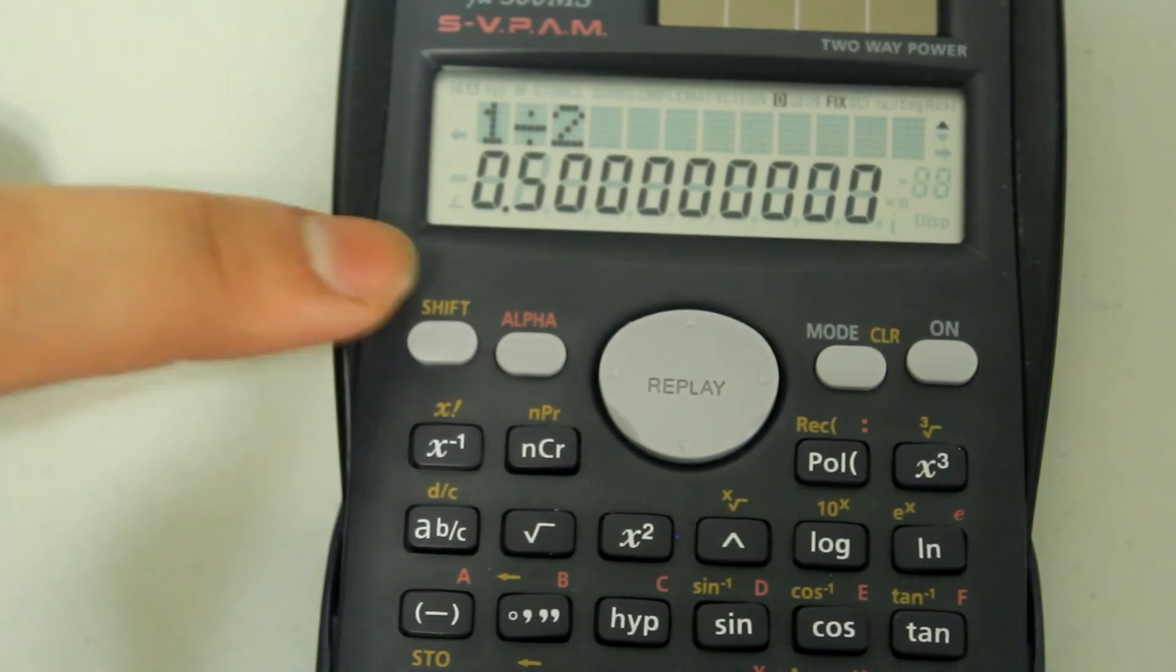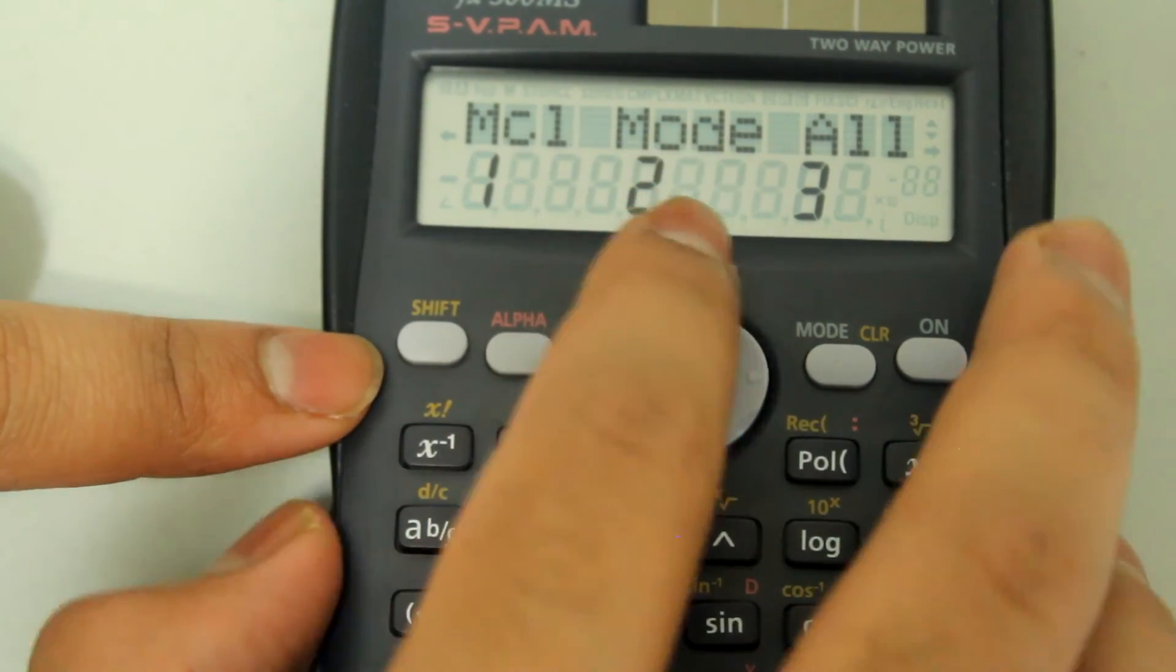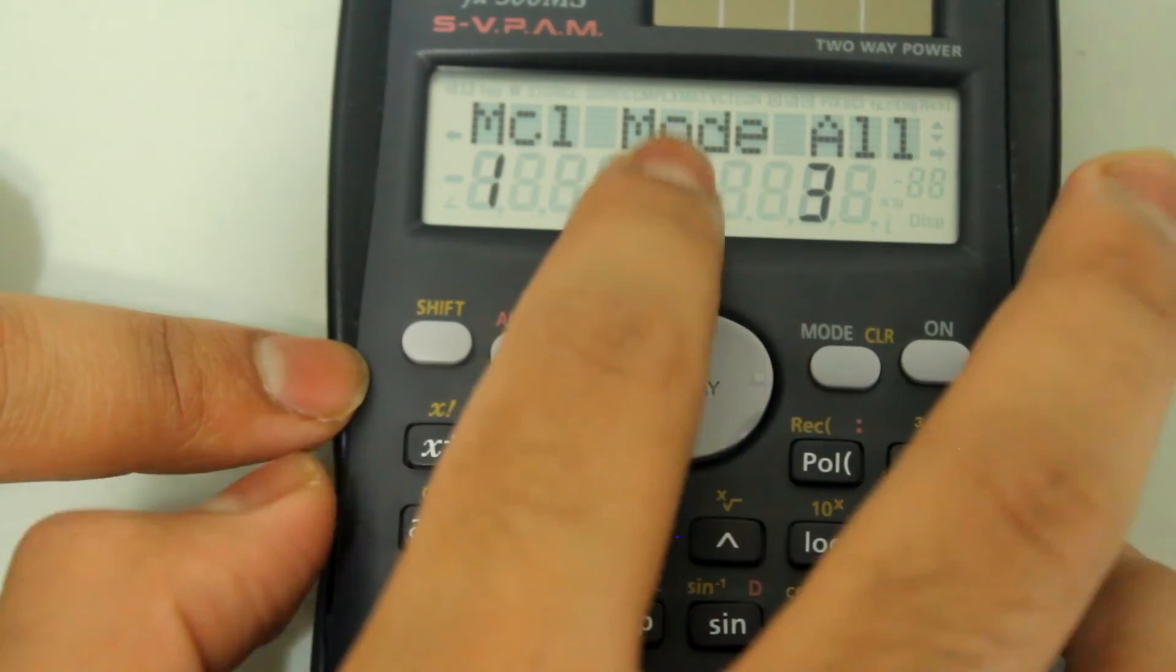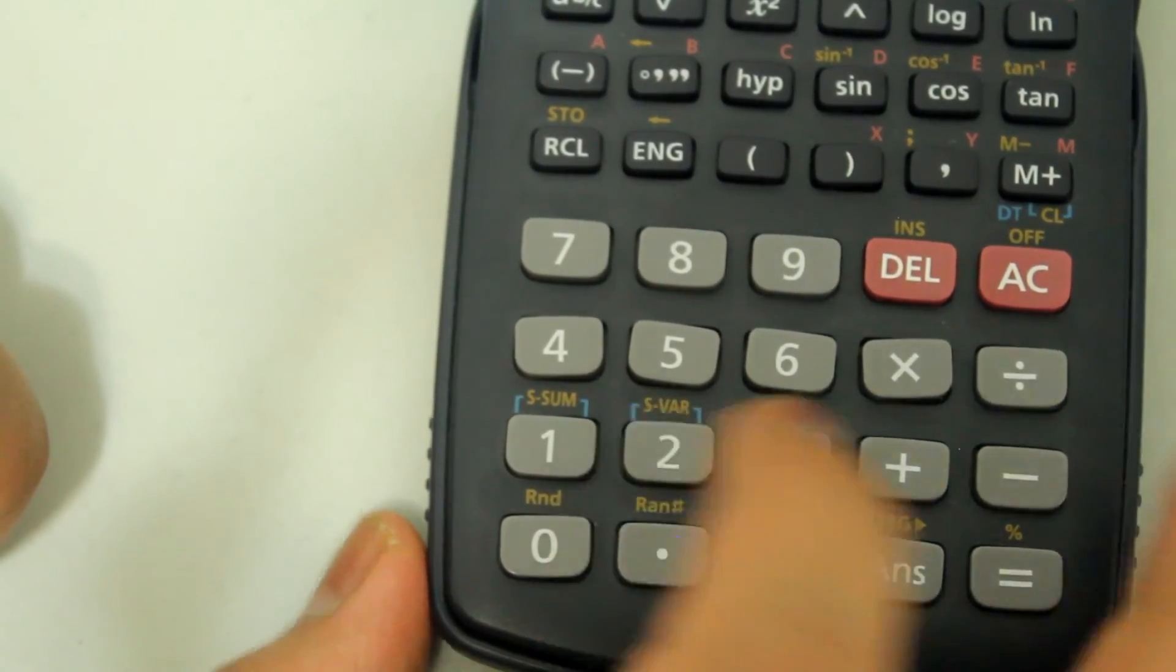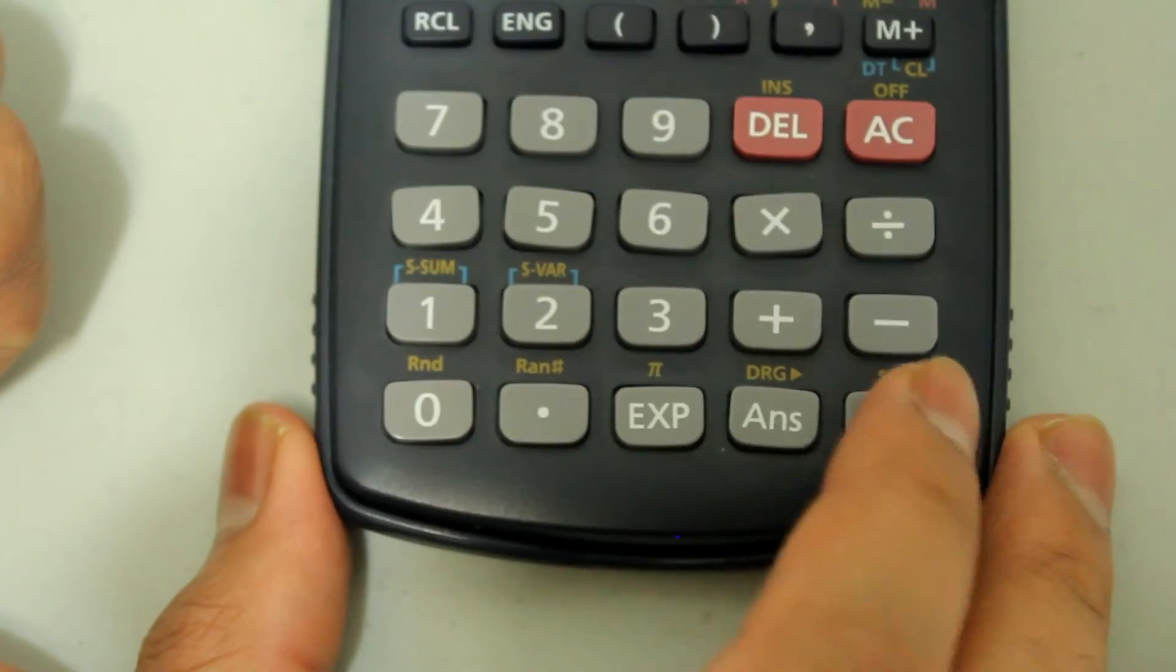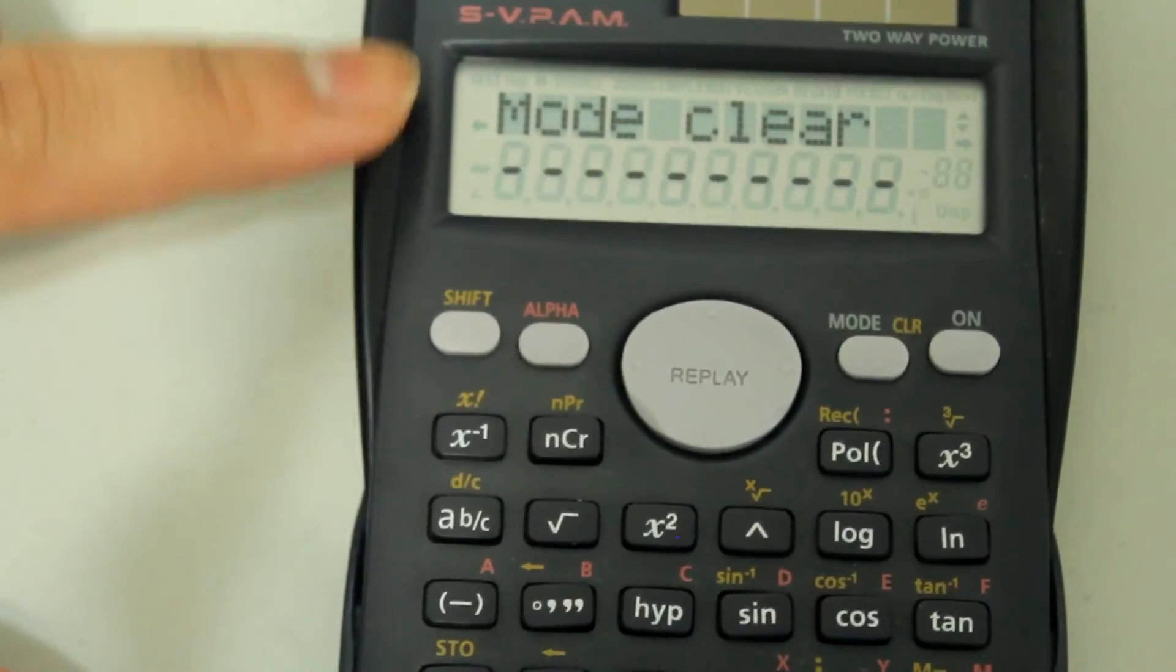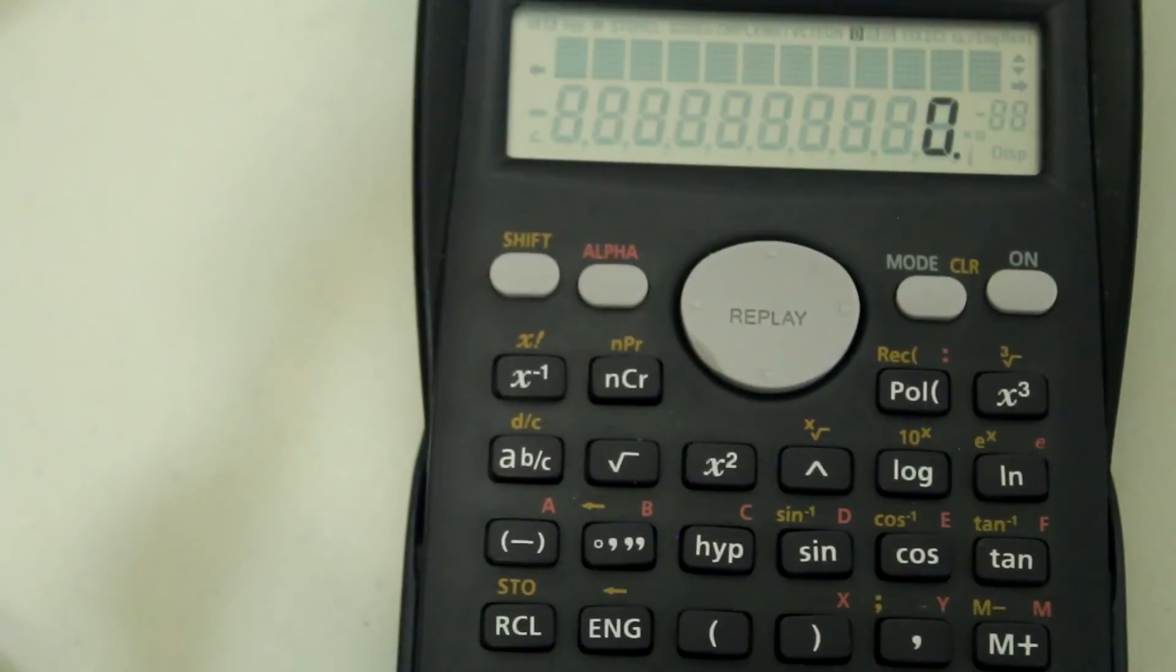In order to do that, hit shift mode. You see that under mode, there is the number 2. So go on the number pad and press 2. Then mode clear comes up. Hit the equal sign. This screen comes up, hit equals one more time. Now the mode is cleared.